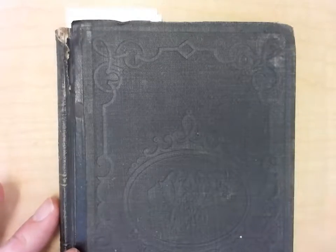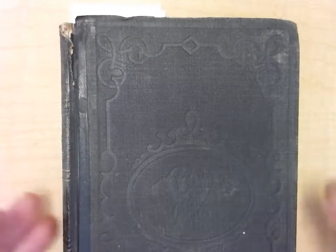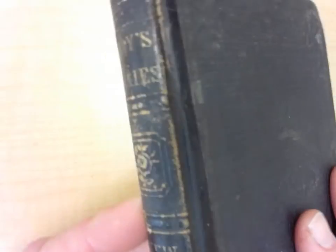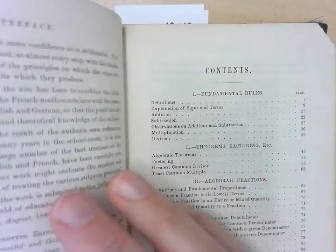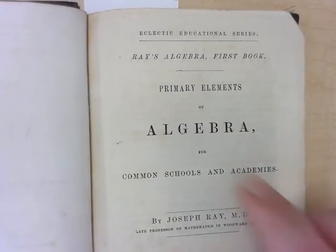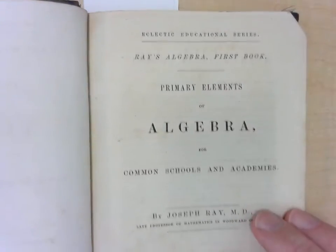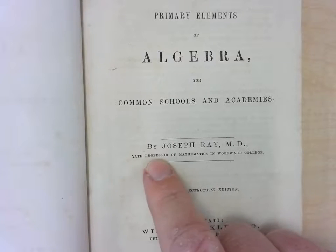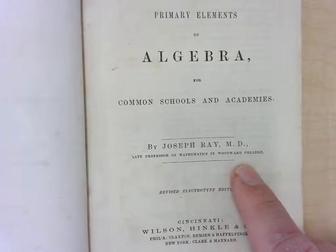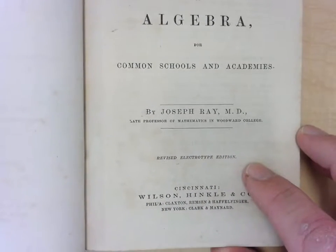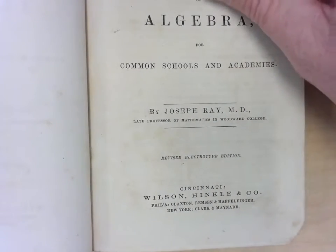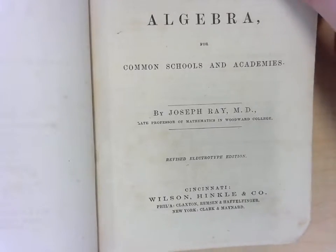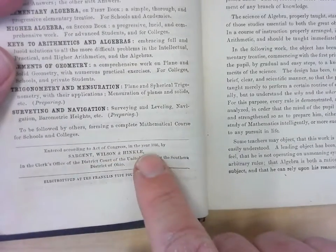Well, I have an old math book collection, and I was looking in my Ray's Algebra. So here's the title page of this book. It's Ray's Algebra first book, and Joseph Ray was the late professor of mathematics at Woodward College, which was connected to Woodward High School in Cincinnati. This book is copyrighted in 1866.